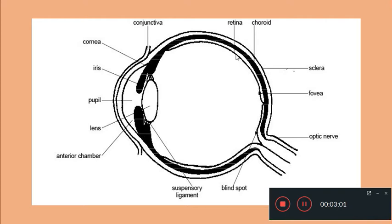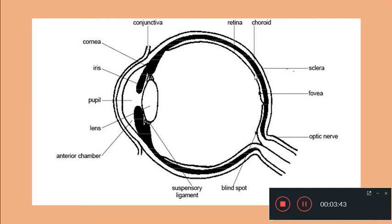Coming to the retina — the retina is the innermost layer and it is not complete anteriorly. The retina extends only up to a certain region and it consists of photosensitive cells, nerve cells, etc. Light comes through the conjunctiva, cornea, passes through the pupil, passes through the lens, and reaches the retina where there are photosensitive or light-sensitive cells. When the light reaches these cells, the cells get excited, and they are connected to nerve cells from which arise nerve fibers.